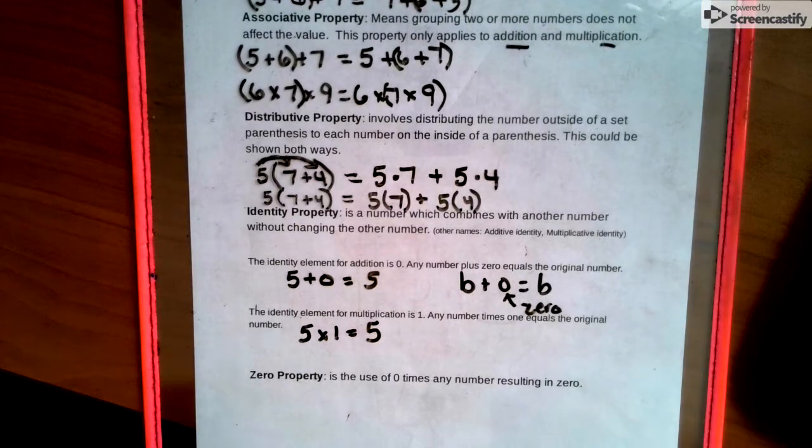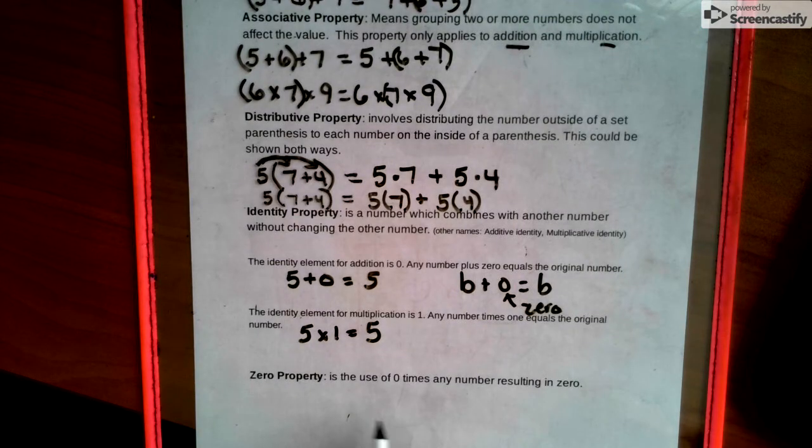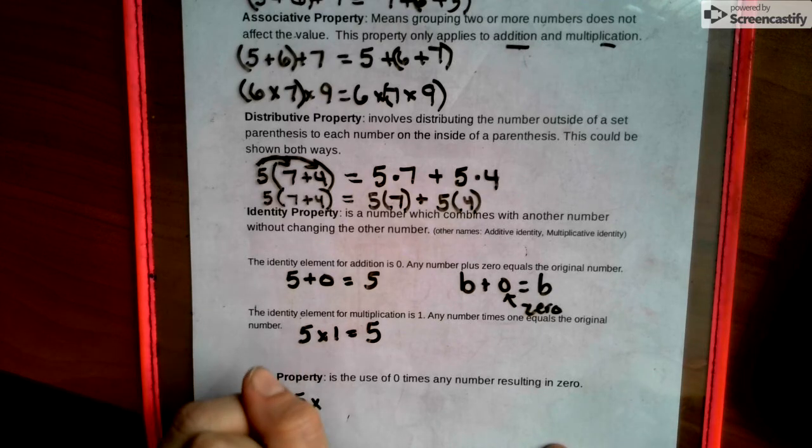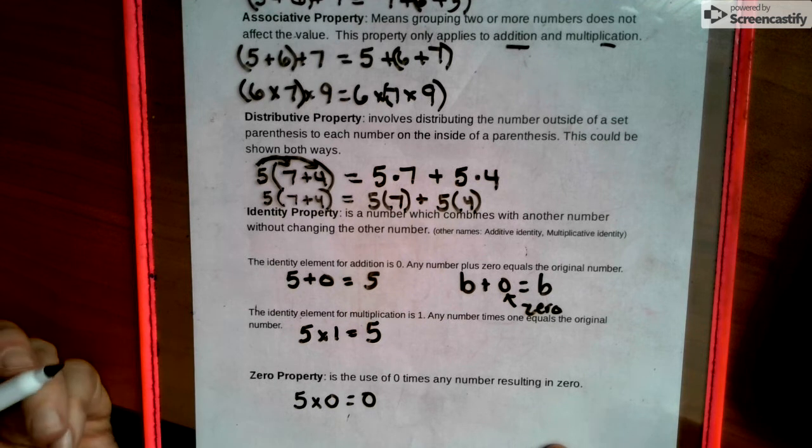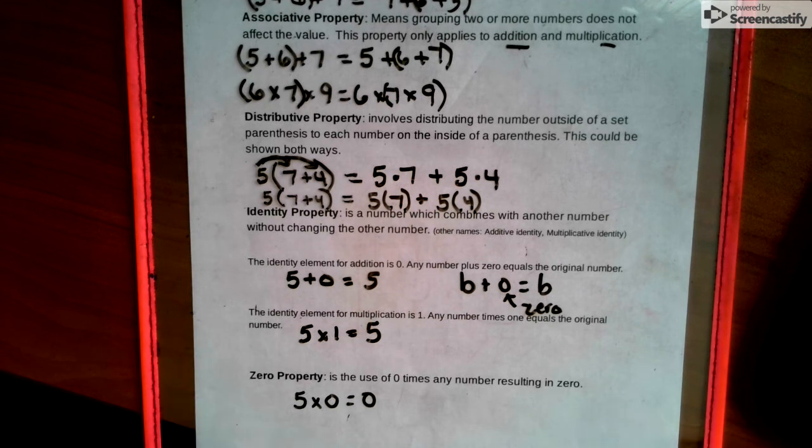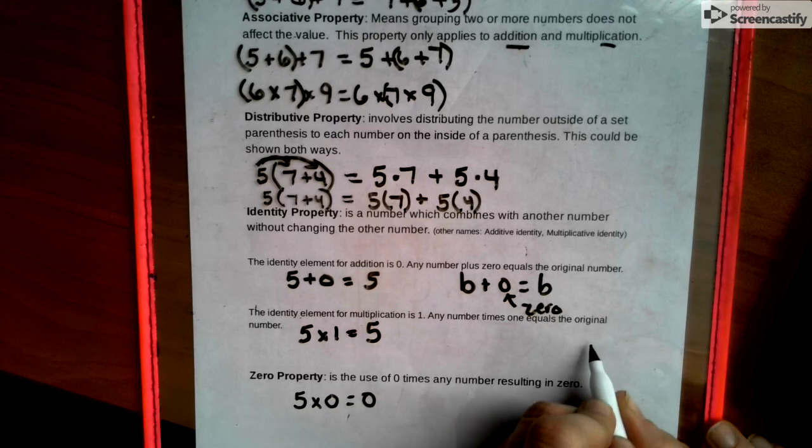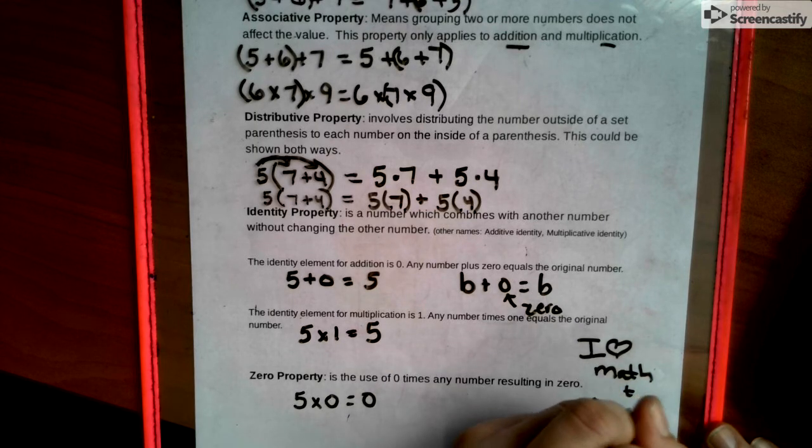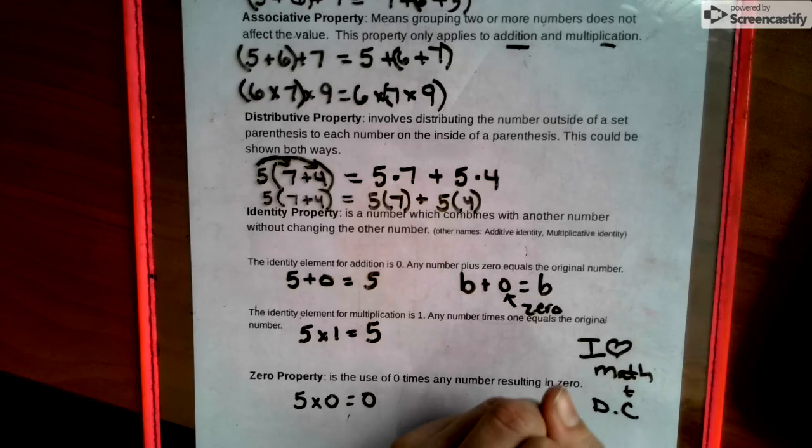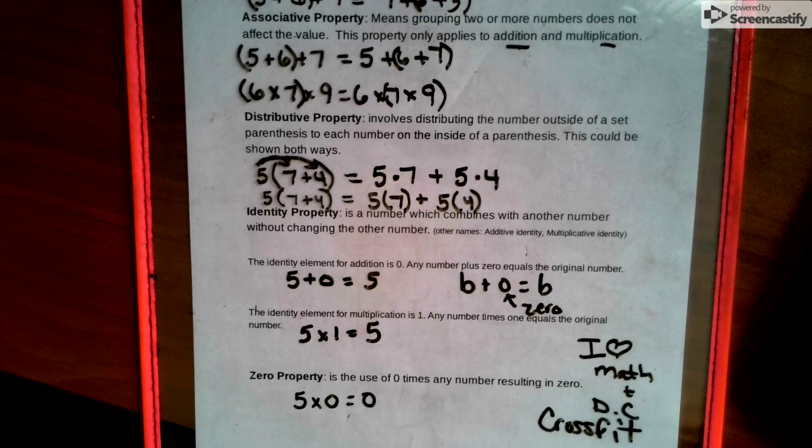Zero property. The zero property is a use of zero times any number resulting in zero. So you would see something like this: five times zero equals zero. That's zero property. It's pretty cut and dry on that property. And as always, this is Mrs. Bobby and I love math and I hate Coke. And of course we can't forget CrossFit.